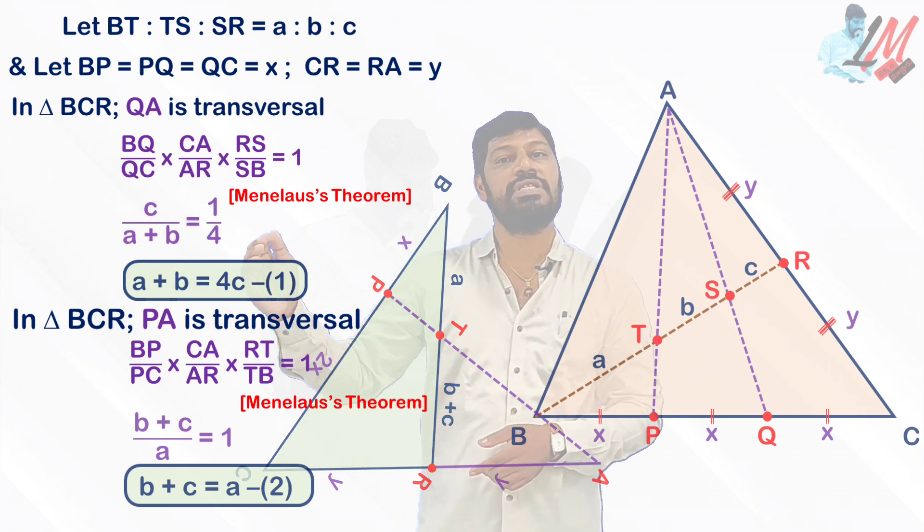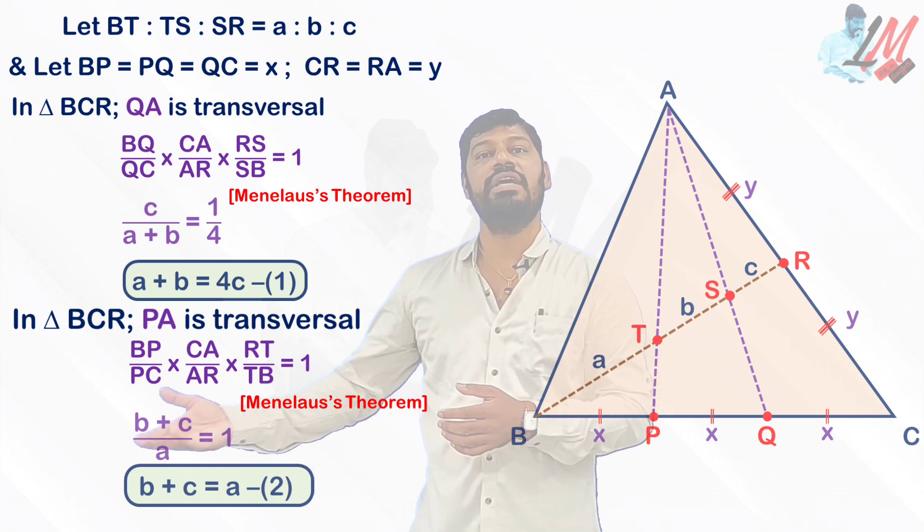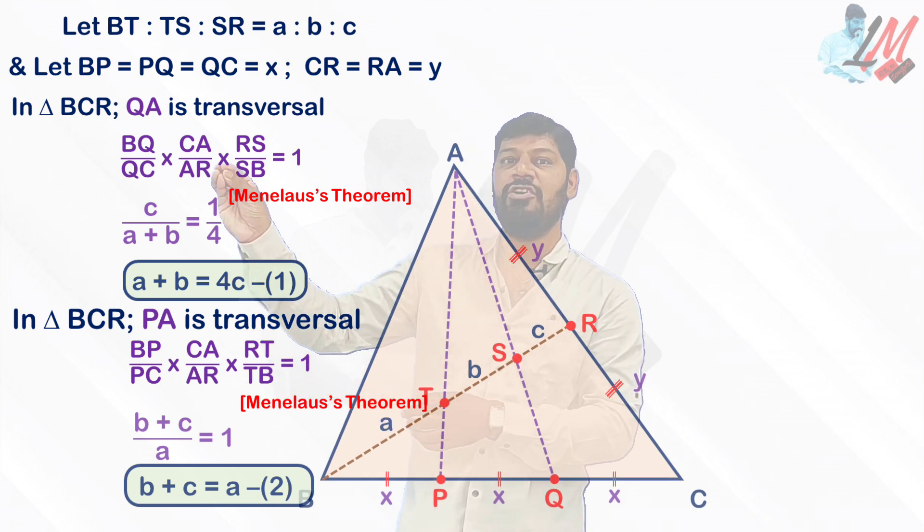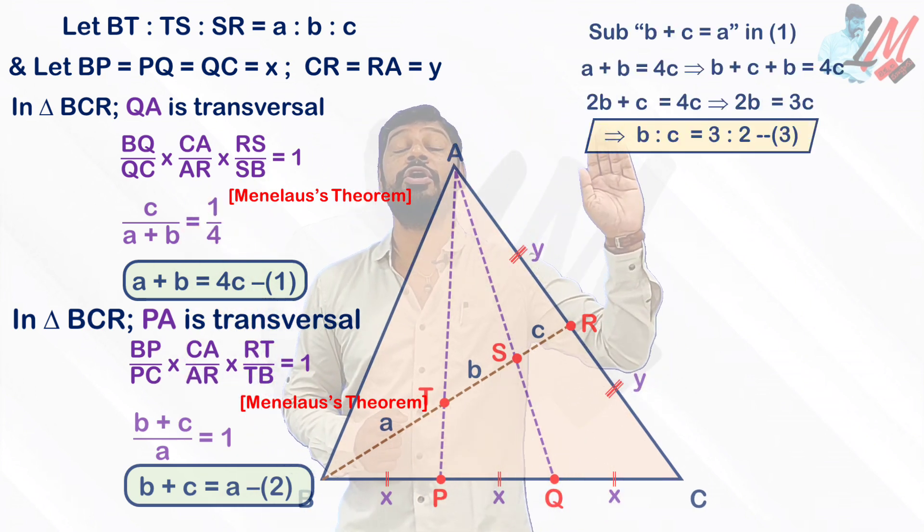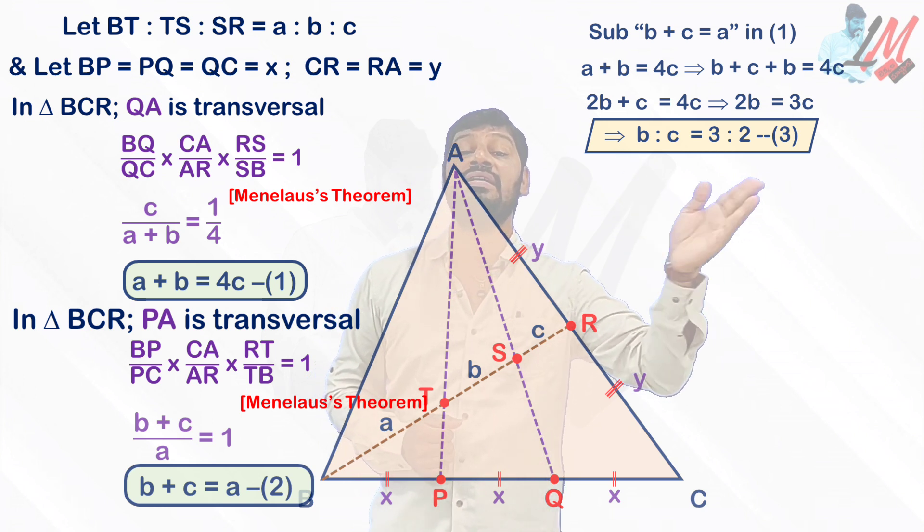Here A plus B equal to 4C and B plus C equal to A, we got two different equations here. So here whatever we got, B plus C equal to A, I am substituting in equation 1. If you do substitution, what you are going to get: you are going to get the relationship or ratio between B and C.